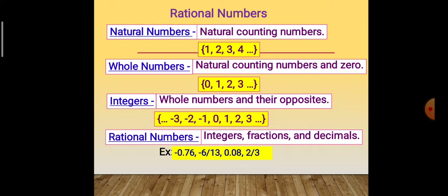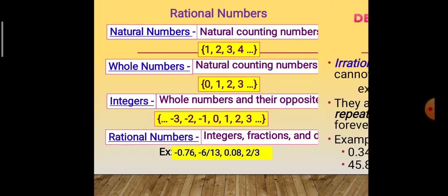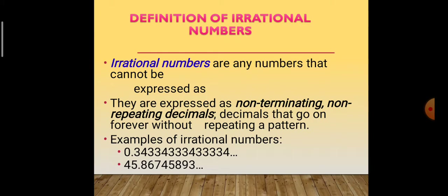Hope you understand the concept of rational numbers. Next, we will go with irrational numbers. What is an irrational number? Irrational numbers are any number that cannot be expressed as P by Q. That means the number which is not in the form of P by Q is called an irrational number. They are expressed as non-terminating, non-repeating decimals — decimals that go on forever without repeating a pattern.